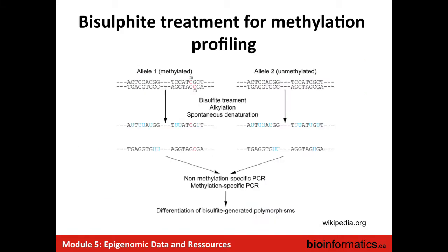The last type of data I'll briefly talk about is methylation profiling. Using either microarrays or sequencing, the DNA gets processed using bisulfite treatment, which affects methylated cytosines differently from unmethylated ones. After sequencing, you can deconvolve which sites were actually methylated. So methylation sequencing or methylation arrays is another way of looking genome-wide at which regions are methylated.